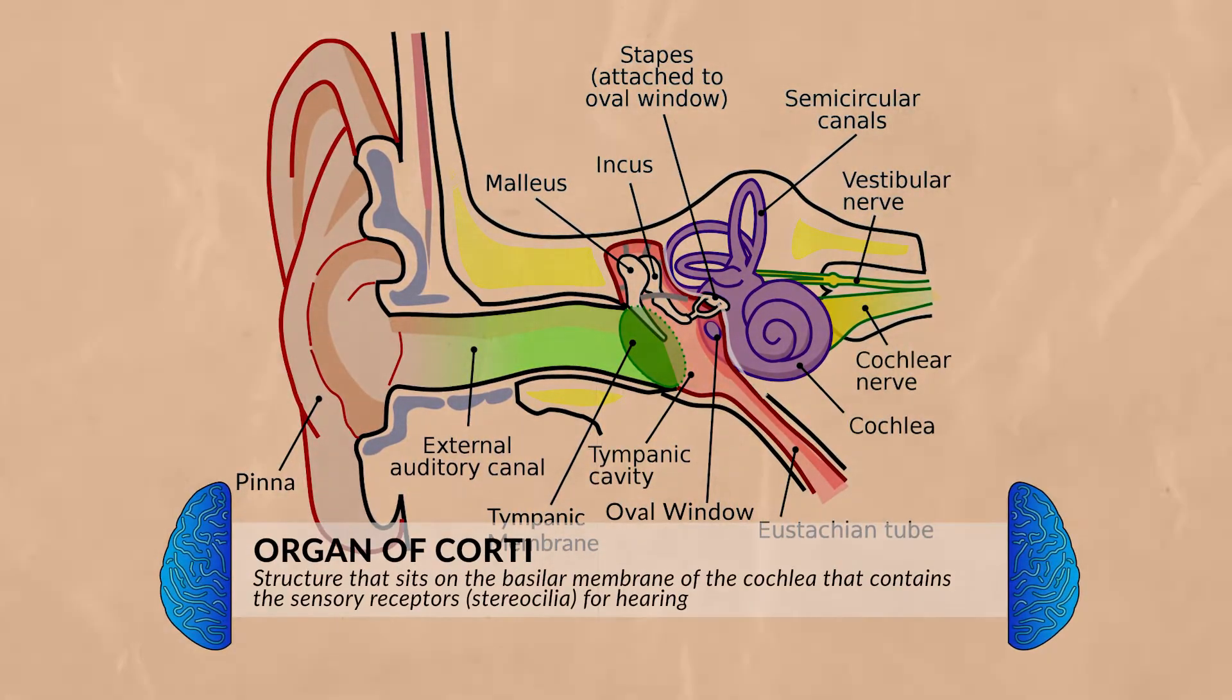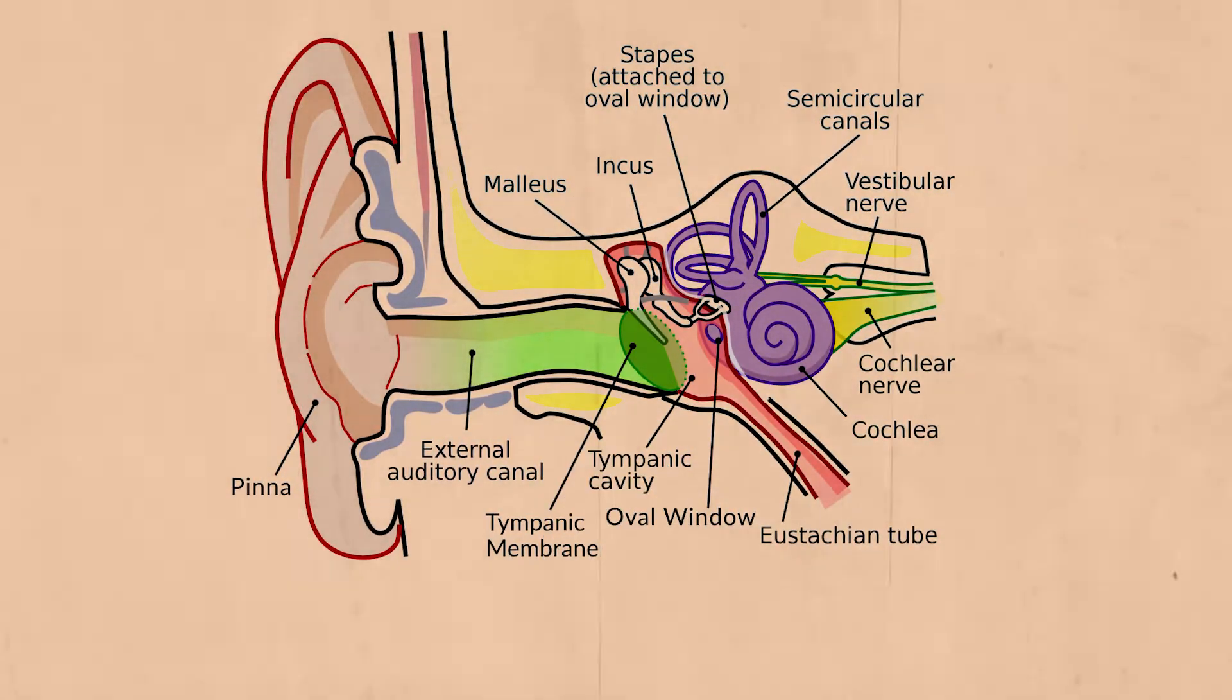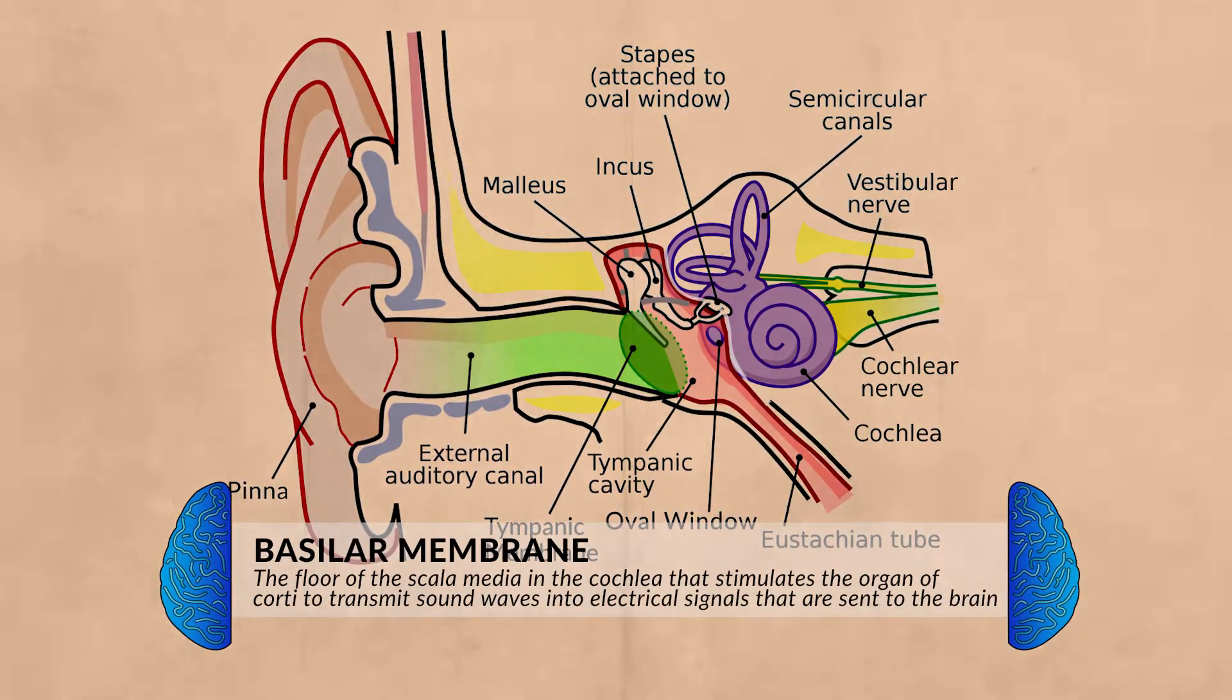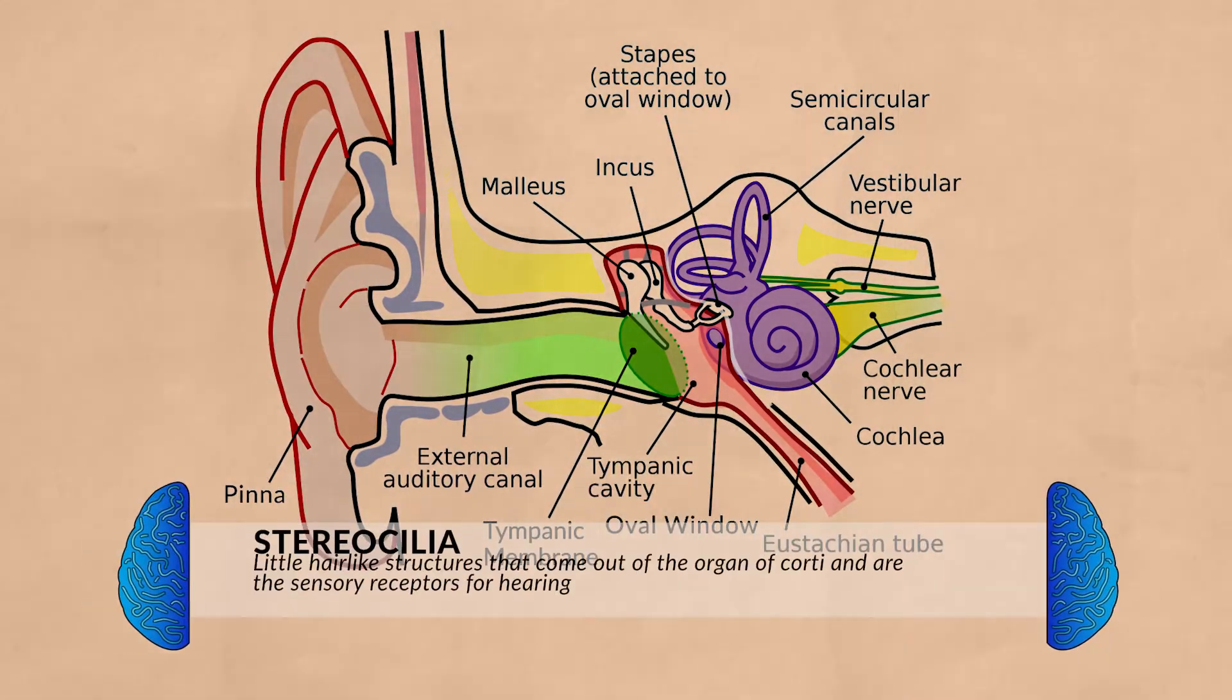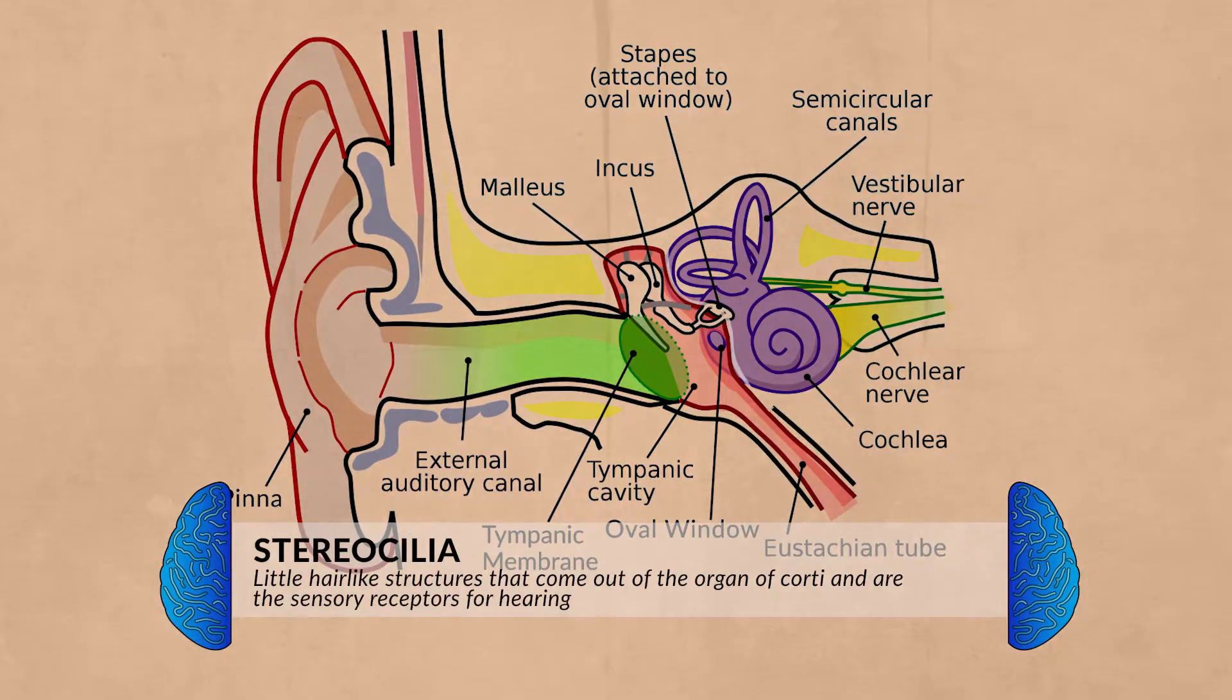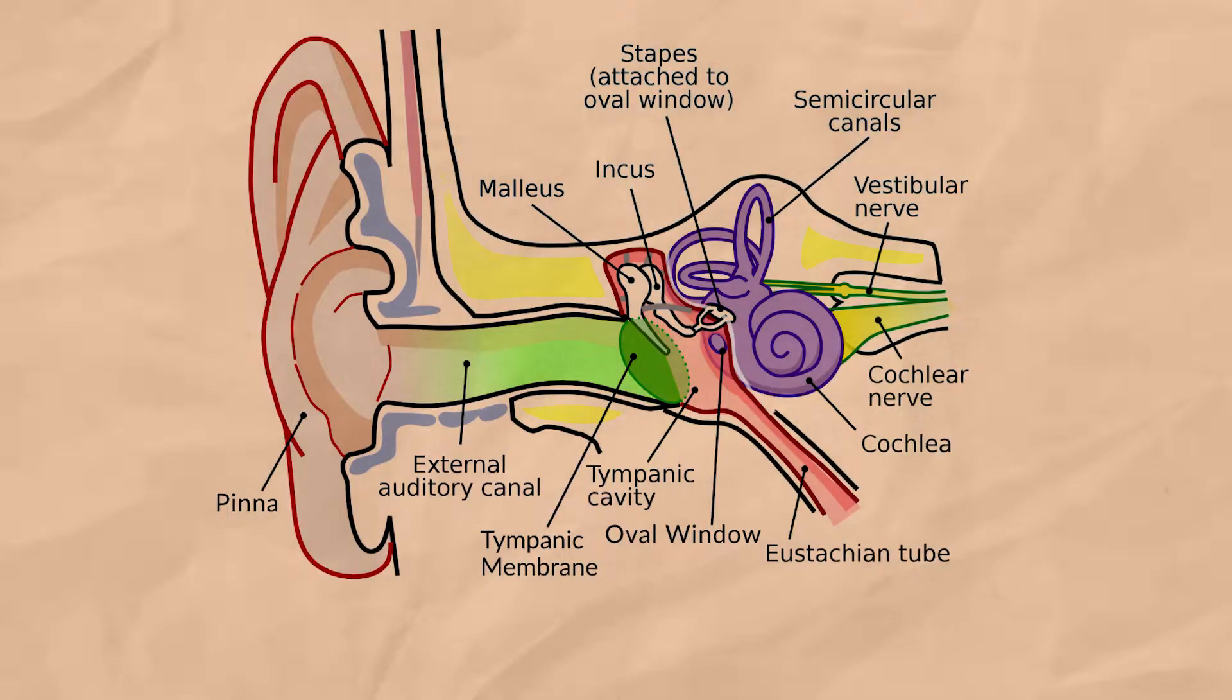The organ of corti contains the sensory receptors for hearing. The organ of corti is sitting on the basilar membrane. When the vibrations come into the inner ear, the basilar membrane will vibrate in a wave-like ripple, which leads to the movement of the stereocilia. These are tiny hairs that protrude from the hair cells of the organ of corti along the basilar membrane. When the stereocilia starts to vibrate, this starts the process of converting the vibrations into electrical impulses to send them to the brain.